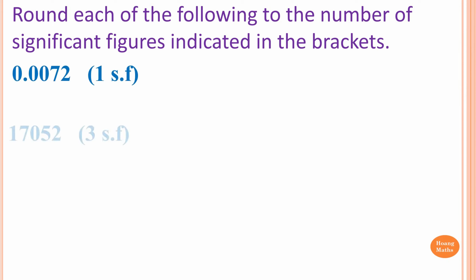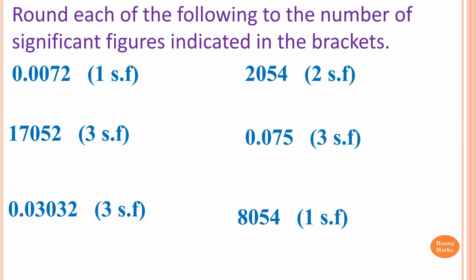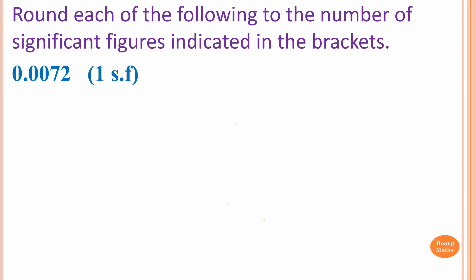Please stop the video and try this one yourself. First one: we know there are 2 significant figures in the first number, because zeros in front of non-zero digits are not significant. We only have 1 and 2. We want to round off to 1 significant figure, which gives us 0.007.